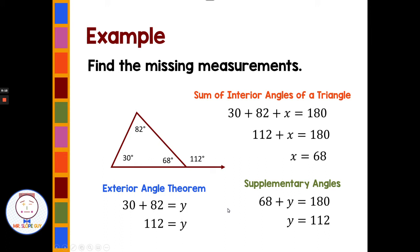Another approach is the exterior angle theorem: 30 plus 82 also equals 112 directly. The great thing about these three rules is they all work together — there are many ways to get to the right answer. That's really the beautiful thing about math, how all these rules fit together so nicely that we can use them interchangeably to find the same answer.